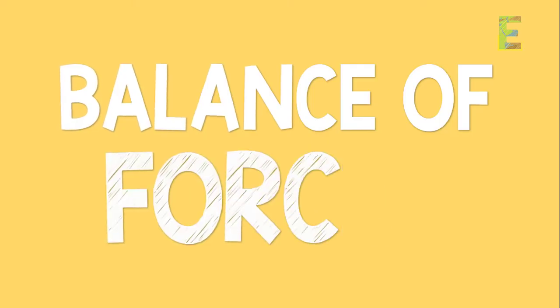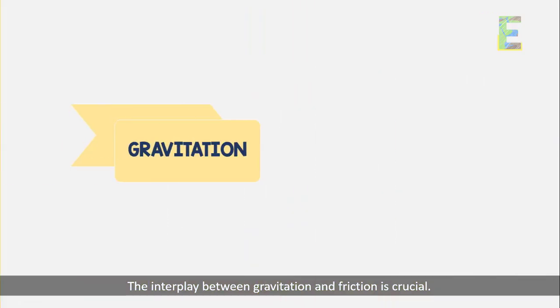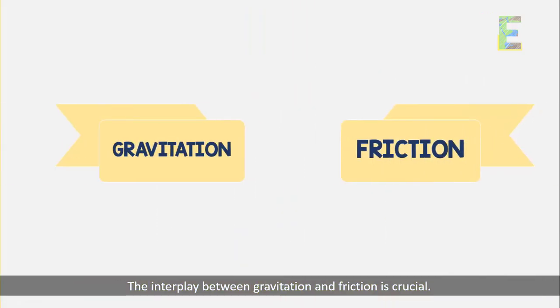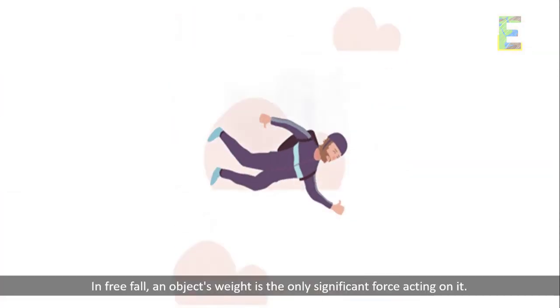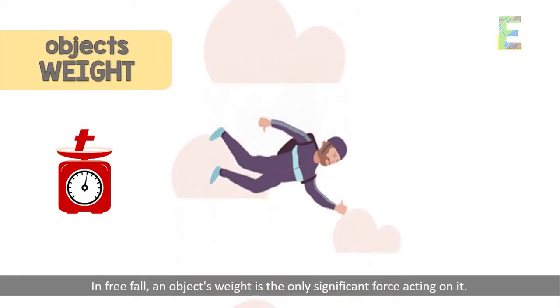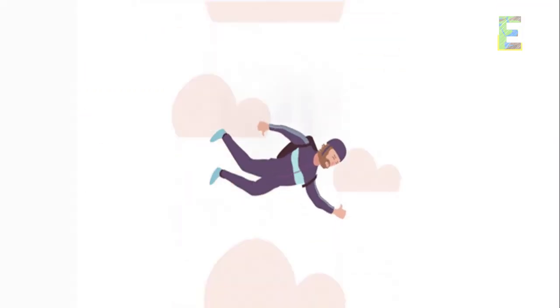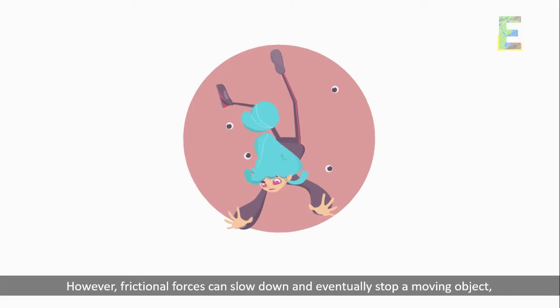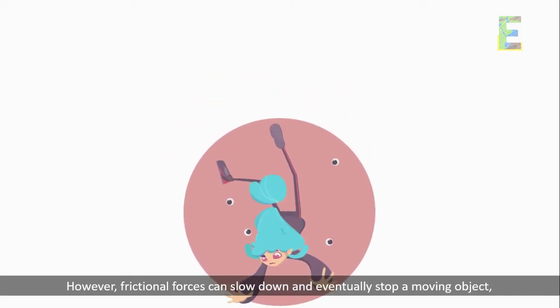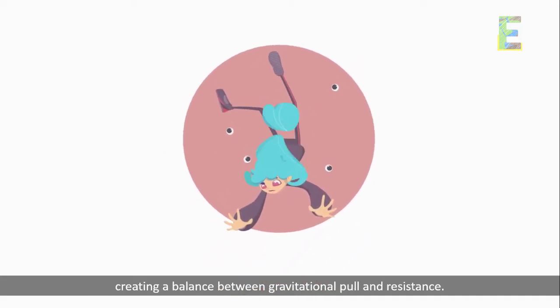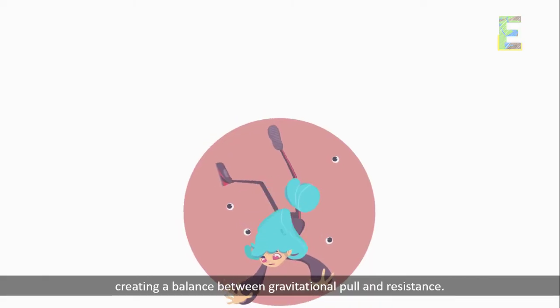Balance of forces. The interplay between gravitation and friction is crucial. In free fall, an object's weight is the only significant force acting on it. However, frictional forces can slow down and eventually stop a moving object, creating a balance between gravitational pull and resistance.